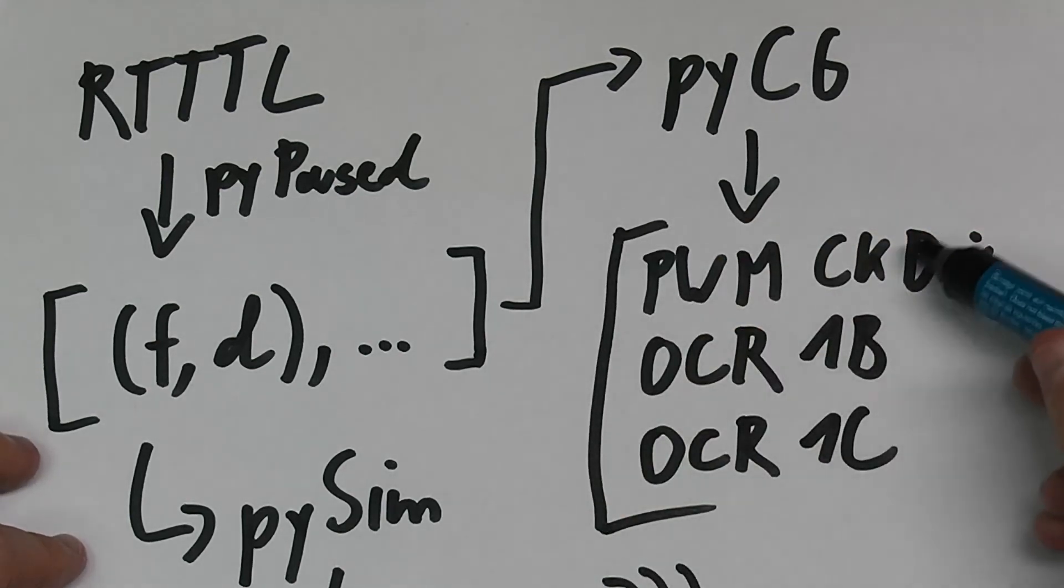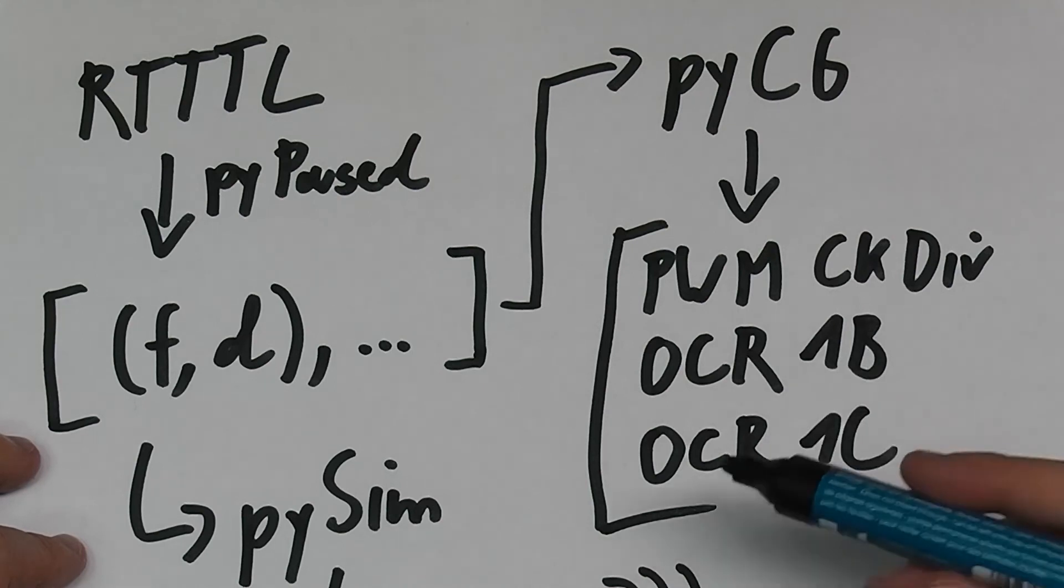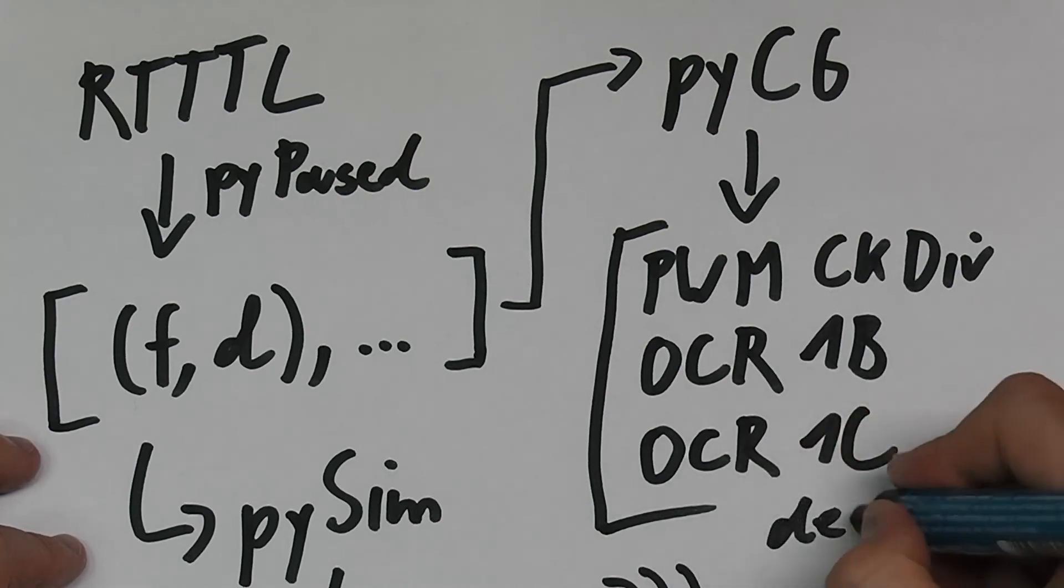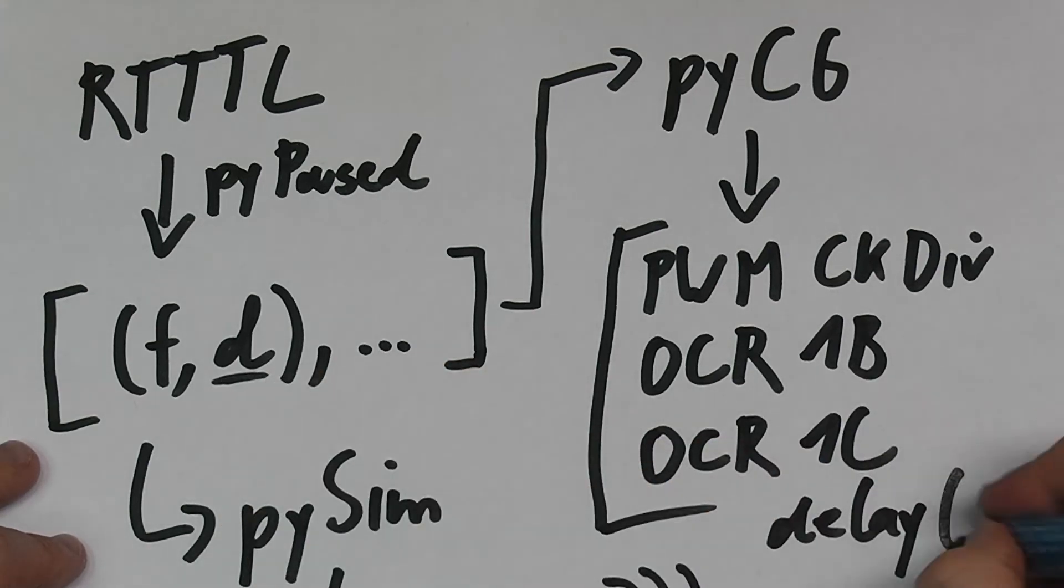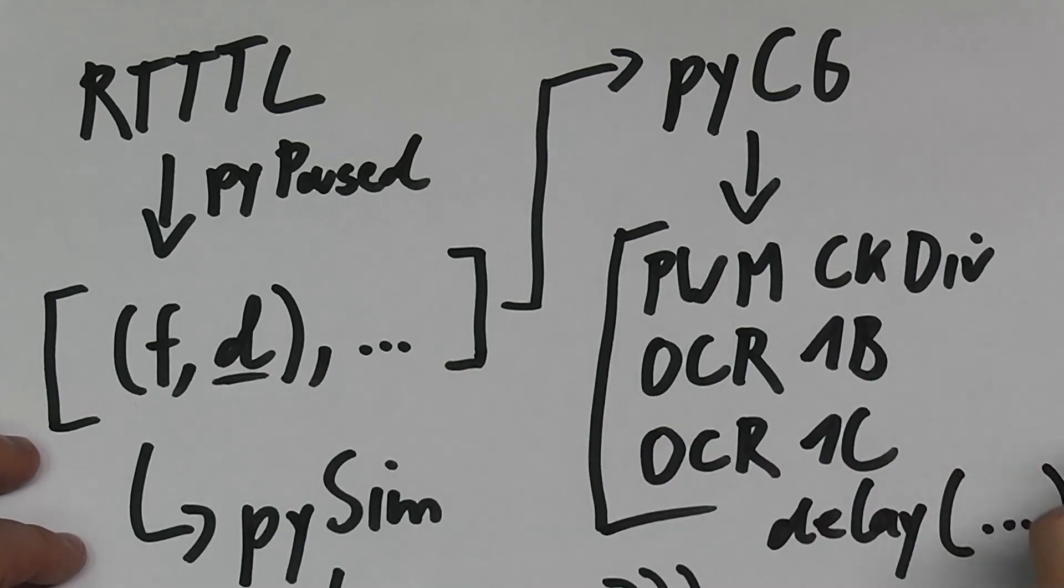It basically just generated code output that continuously set those three variables and had a little delay loop with the according millisecond variable here after each note.